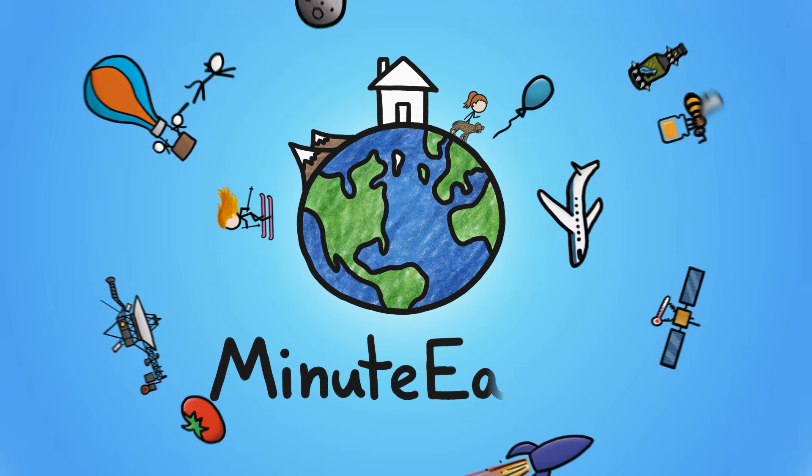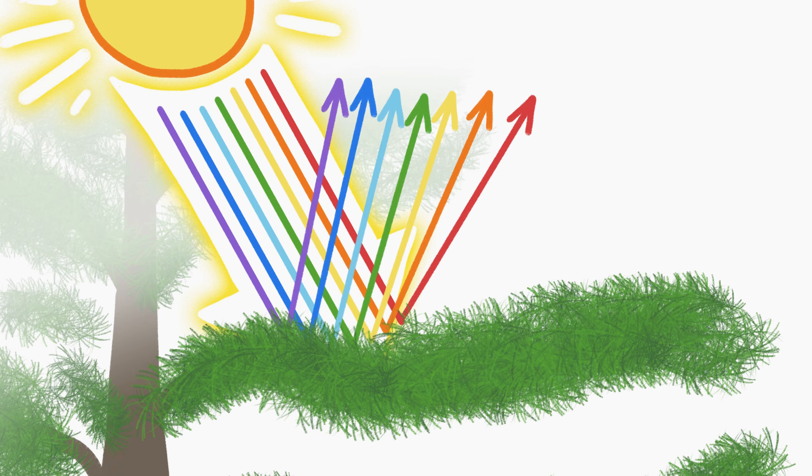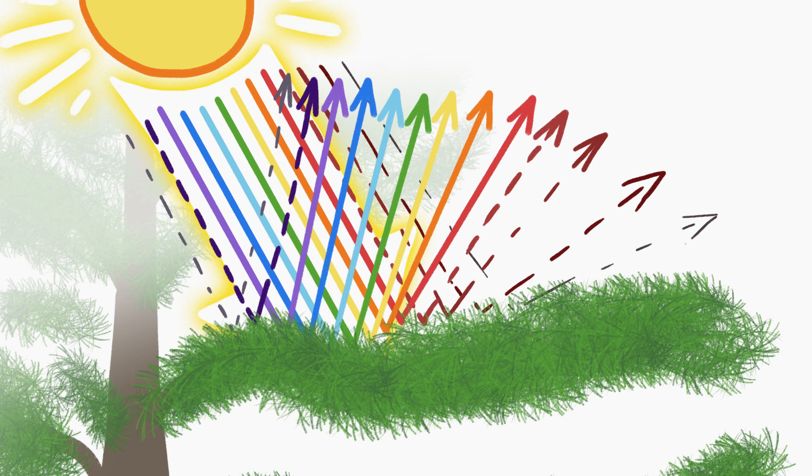Hi, I'm Kate, and this is MinuteEarth. The kind of fingerprints I'm talking about start not with fingers, but with light. When light hits, say, a pine tree, certain wavelengths of light reflect off the tree. Some of these reflected wavelengths are ones we humans can see, but others are in the invisible part of the spectrum.